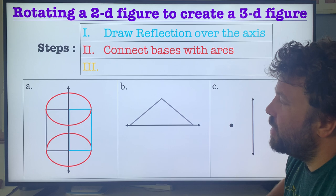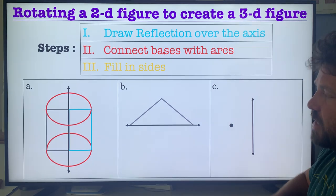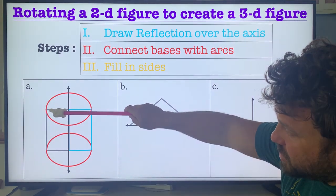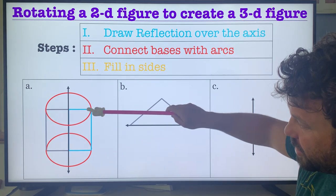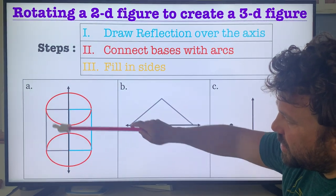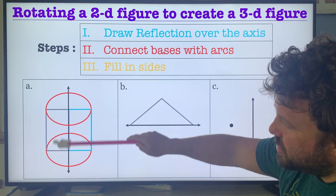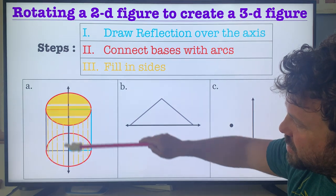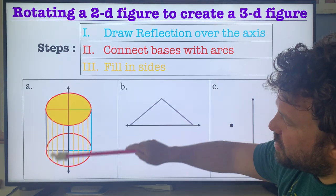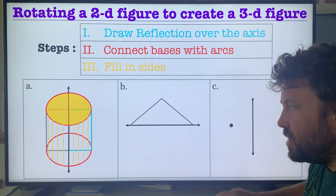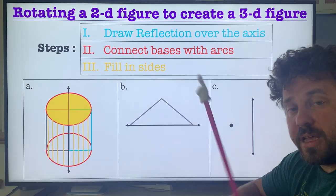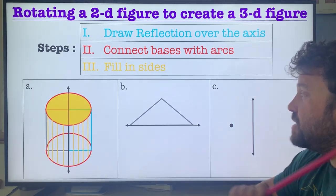Step 3: you're going to fill in the sides. These pieces right here are your diameter — this is a flat side, so I can fill it in. You just connect the pieces that are adjacent. Fill in the top, connect all these little pieces, and you can see a three-dimensional figure. What does A look like? It looks like a cylinder.